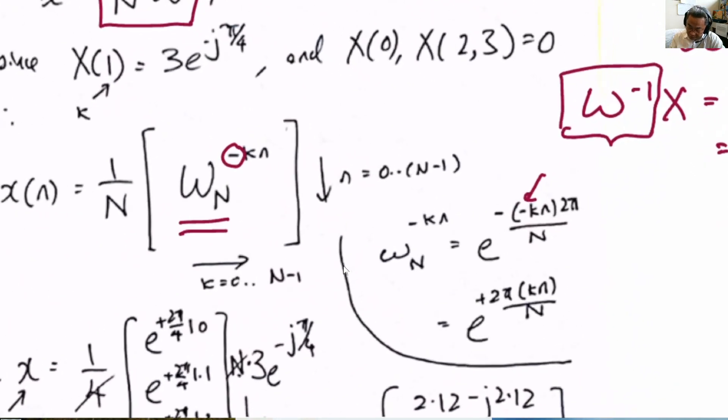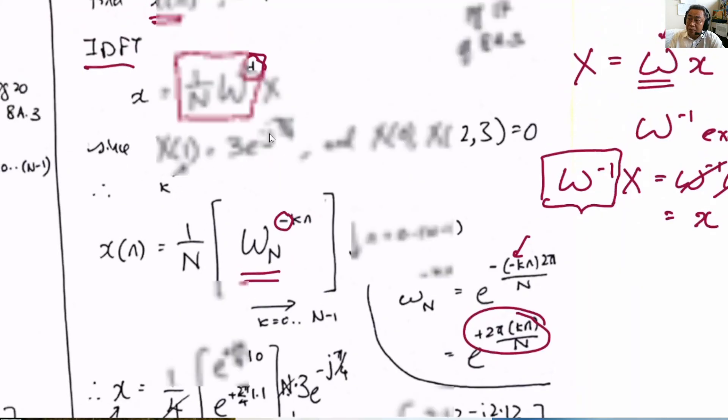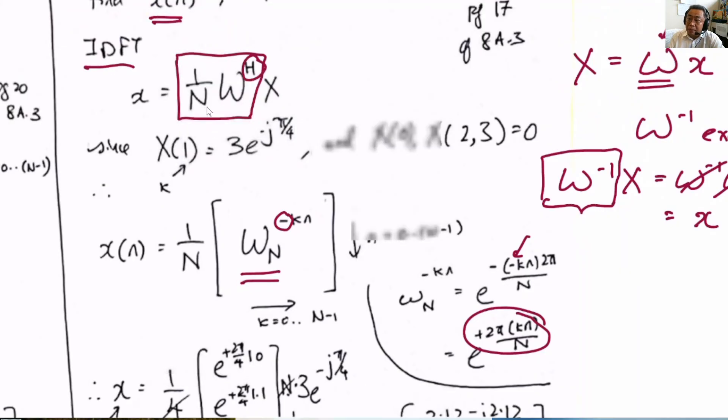There is a minus within the W matrix. Originally here, minus minus becomes plus, so the elements of this matrix are plus. Now with that, we know how to fill up the W^H matrix. There's a 1 over N here from our original equation to say 1 over N W^H is the inverse of the W matrix.